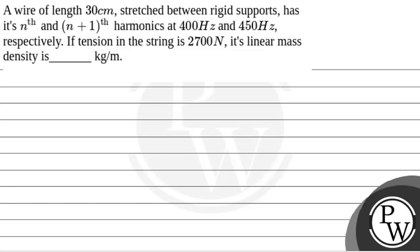Let's see the question given that a wire of length 30 cm stretched between rigid supports has its nth and n plus 1th harmonics at 400 Hz and 450 Hz respectively. If the tension of the string is 2700 Newtons then its linear mass density is what?